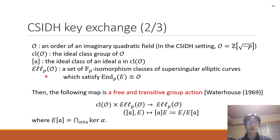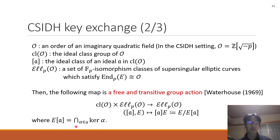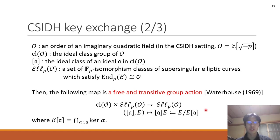Let Ell_p(O) be the set of F_p-isomorphism classes of supersingular elliptic curves which satisfy that their endomorphism ring is isomorphic to O. Then this map is a free and transitive group action, where E_R is the kernel of endomorphisms in integral ideal R. This E_R is a subgroup of E, and R*E is defined as E/E_R. Then this map becomes a free and transitive group action.